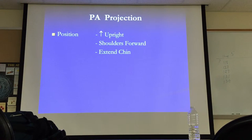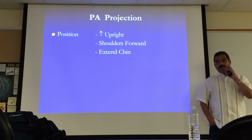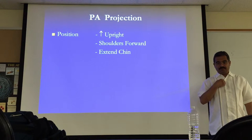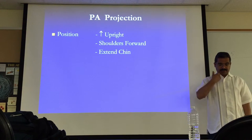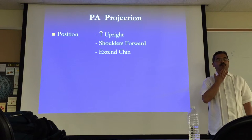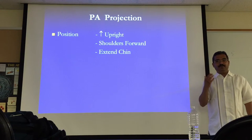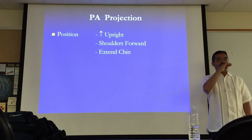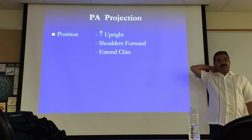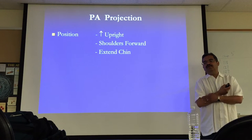Next, extend the chin. The purpose of extending the chin is so you don't have the chin over the apex. Sometimes patients will be slouched and the chin is right over the apex, so you want to just bring it straight up. You don't want to bring it up too far because then you have the occipital bone over the apex and you defeat the purpose. So it's just straight — you can elevate it a little bit, but if you see the occipital bone over the spine then that's too much.